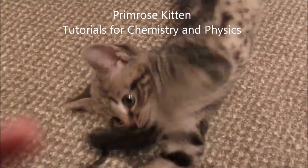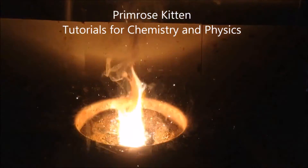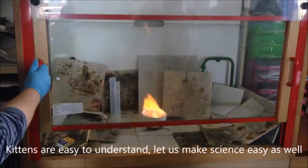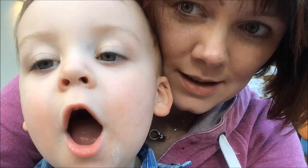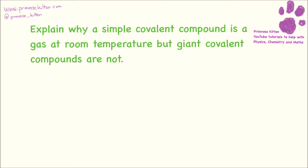Hey guys, I've been looking at the mark schemes and this is what the examiners would like you to write if they're asking about the difference between simple and giant covalent structures. This is a lovely question if it comes up: explain why a simple covalent compound is a gas at room temperature but a giant covalent compound is not.